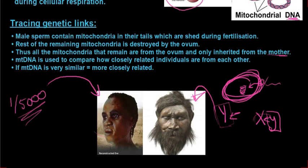And that is the end of genetics and inheritance — we are done with the chapter. Next, we are going to look at the brain, the eye, and some very interesting things. But that is the end of this specific chapter.